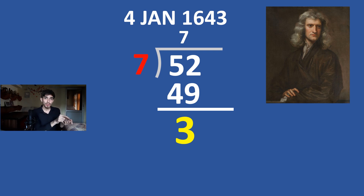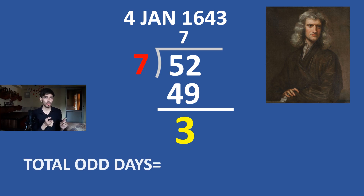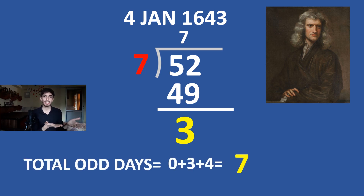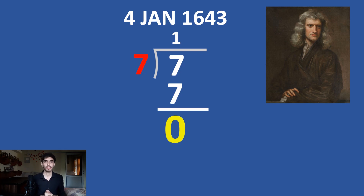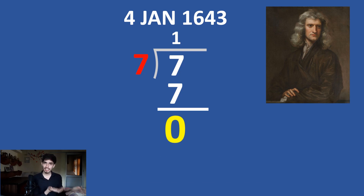Now, till 4 January, we have 4 extra odd days. Since this is less than 7, those 4 days count for 4 odd days. So 3 plus 4 equals 7. Since 7 is bigger than 6, divide by 7 — remainder 0. That means on the date of birth of Newton, it was a Sunday.